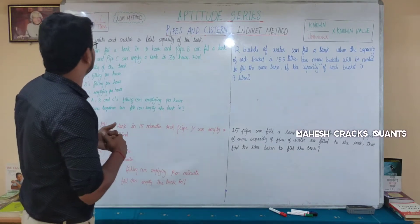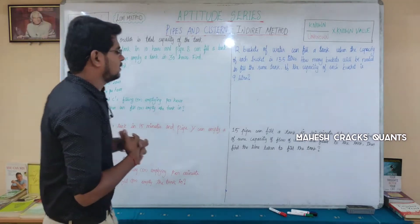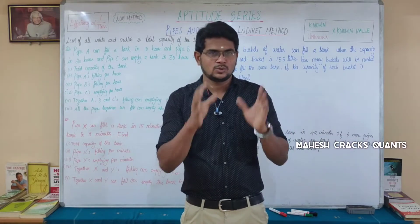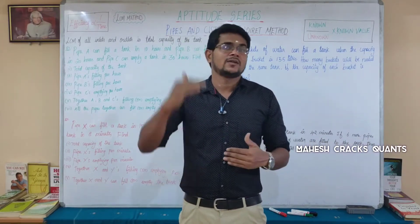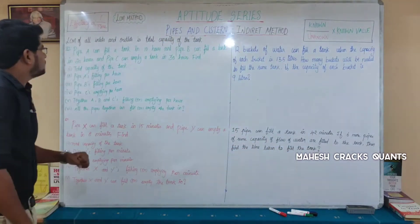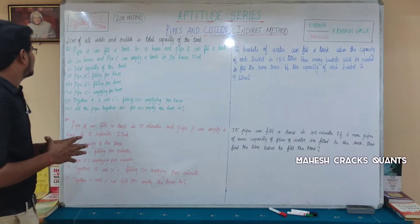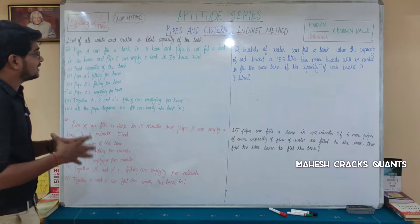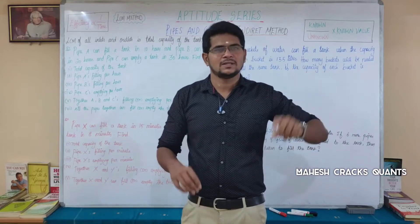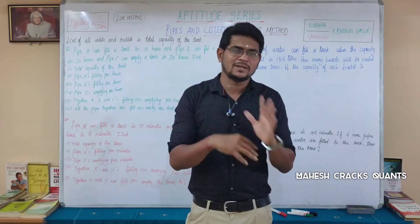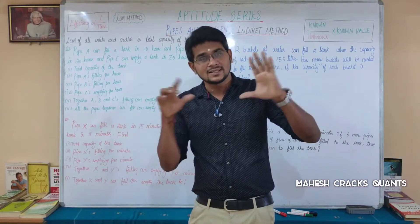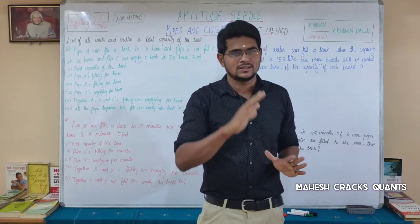LCM of all the inlets and outlets gives us the total capacity of the tank. For Example 1: Pipe A can fill a tank in 10 hours and Pipe B can fill a tank in 20 hours. Pipe C can empty a tank in 30 hours — it empties the full tank in 30 hours. That is why it is taken as 30 hours.